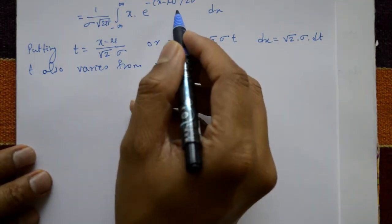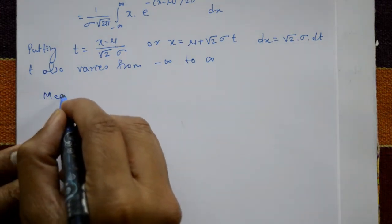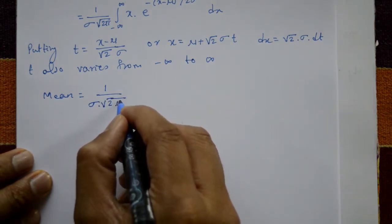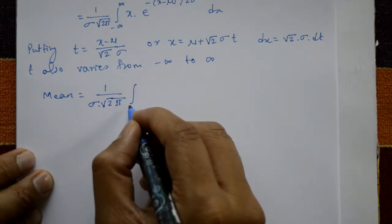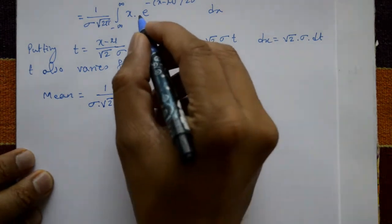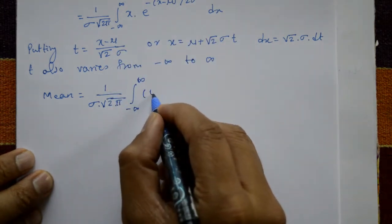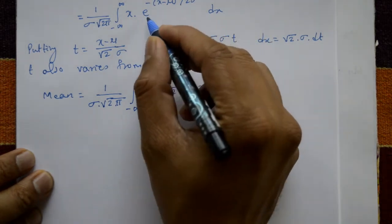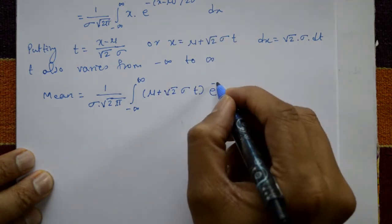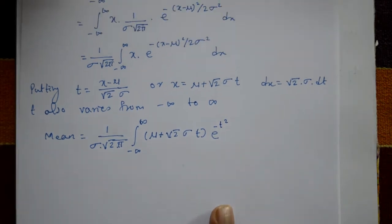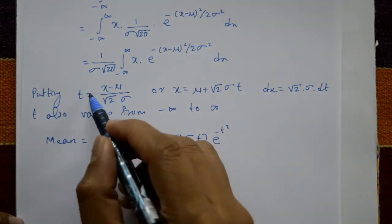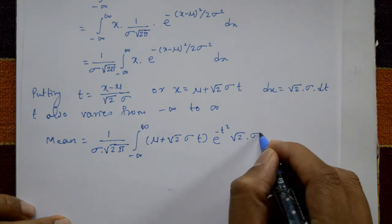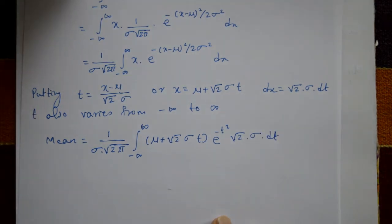Using these results in the mean equation, mu equals 1 over sigma times root 2 pi, times the integration from minus infinity to plus infinity of (mu plus root 2 times sigma times t) times e to the power minus t square, times root 2 times sigma dt.